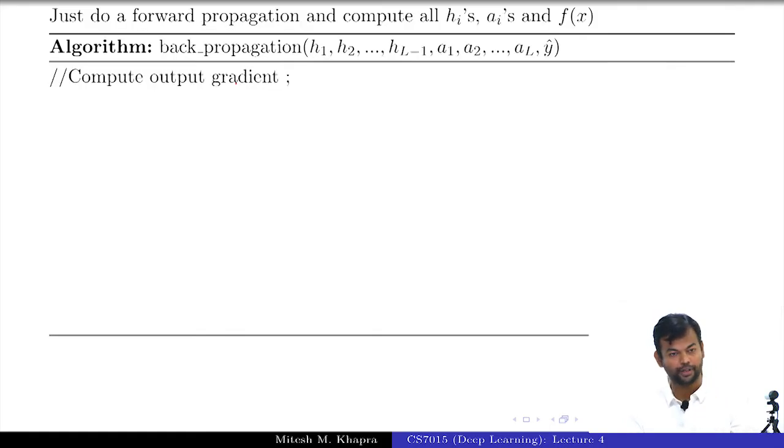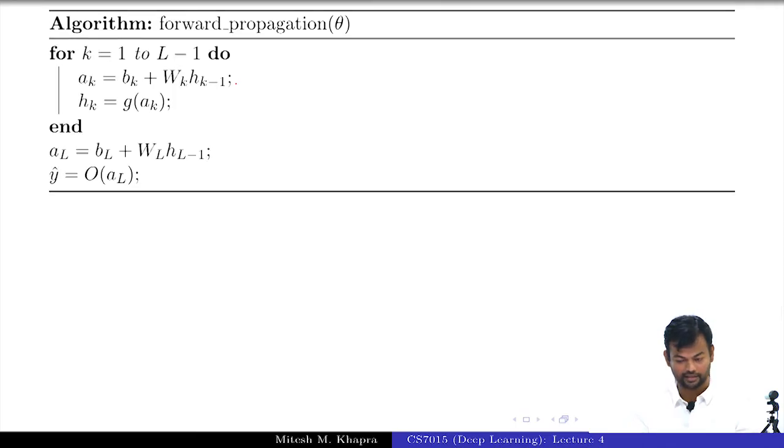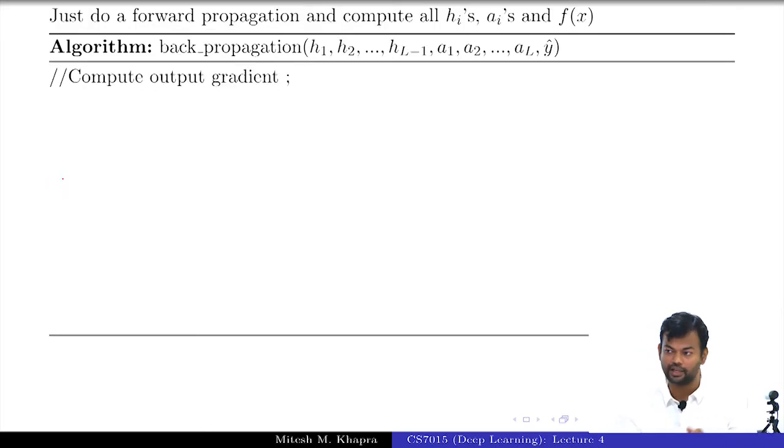Now, we have computed all the h's and the a's. What have we computed? All the a's, all the h's, and the y. Now, you want to do back propagation. So, back propagation, the loop will be from i equal to 1 to L minus 1.